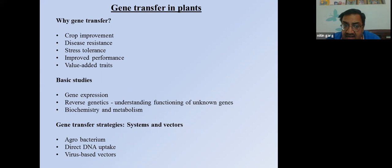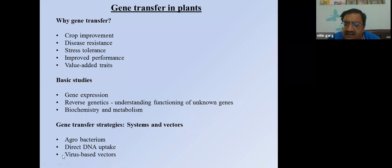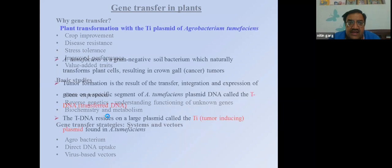There are two types of genetics. Forward genetics: we have a gene and we know the phenotypic character of that gene. Reverse genetics: we have unknown genes and must characterize the phenotypic character. For gene transfer studies, methods include Agrobacterium (natural gene transfer), direct DNA uptake, and virus-based vectors.